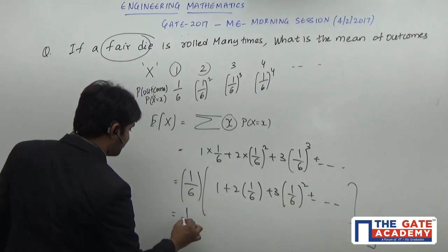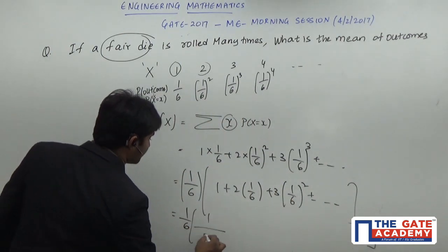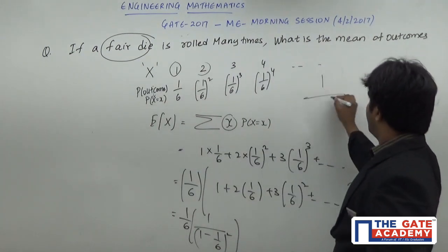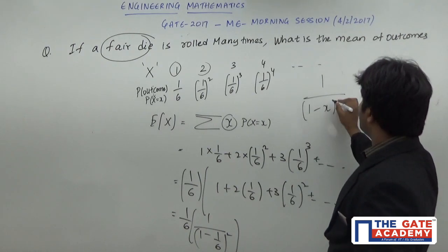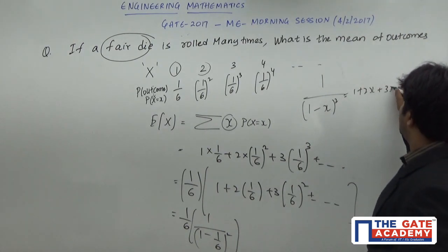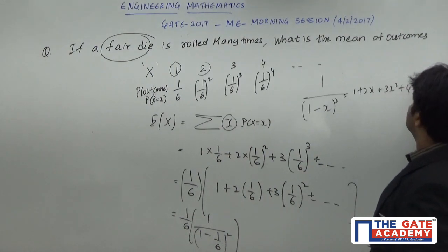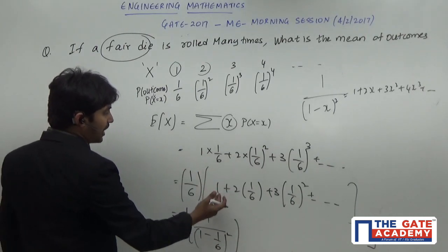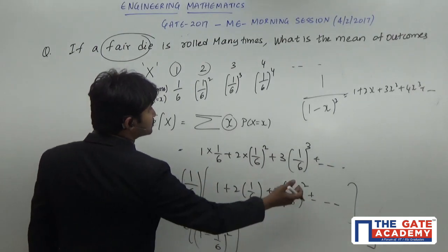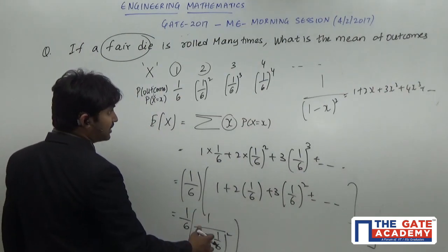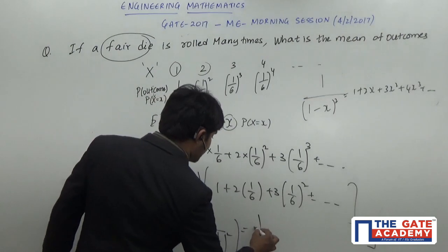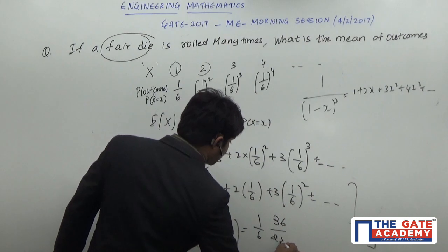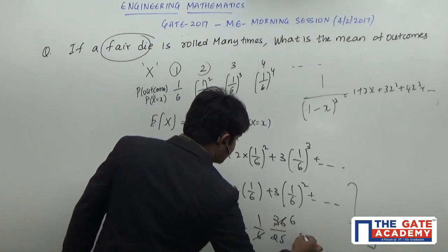This is equal to (1/6) × 1/(1 − 1/6)². Why? Because we know the identity: (1 − x)⁻² = 1 + 2x + 3x² + 4x³ + so on. Using this logic, with 1/6 taken as common and the series 1 + 2x + 3x² + ..., we can write it as 1/(1 − 1/6)². So it equals (1/6) × (36/25), which gives us 36 in the numerator, 25 in the denominator — so it is equal to 6/25.